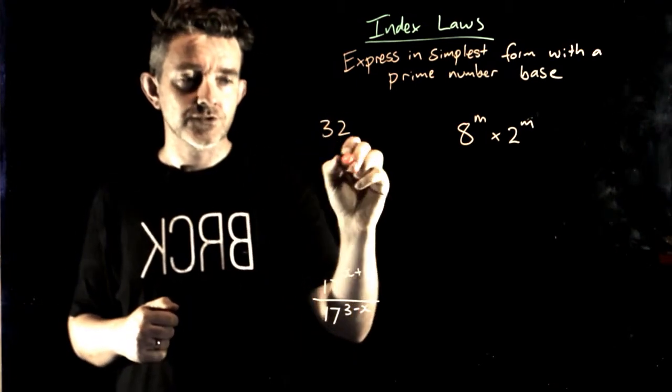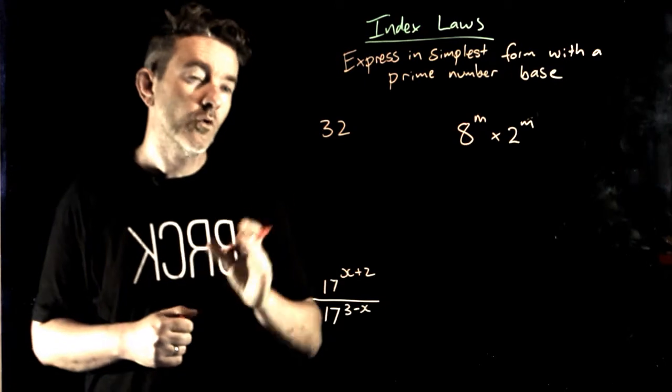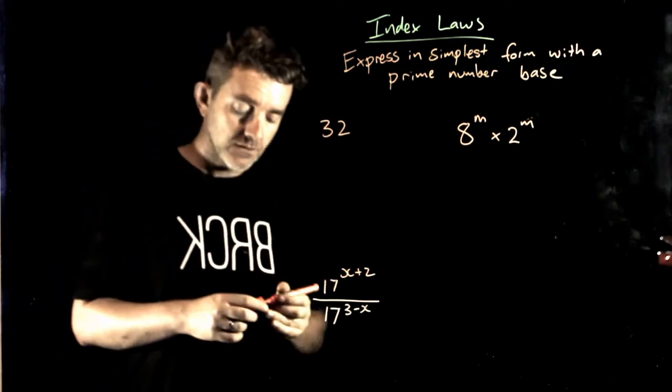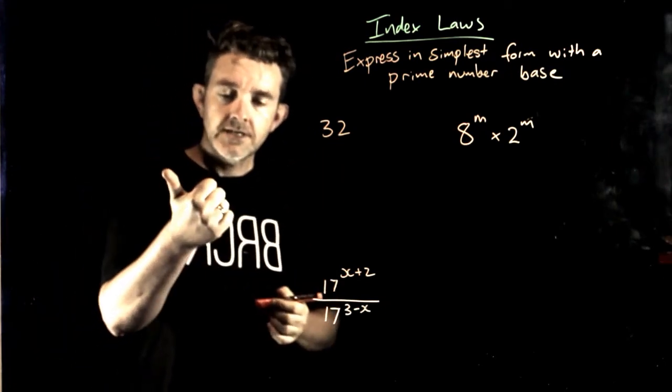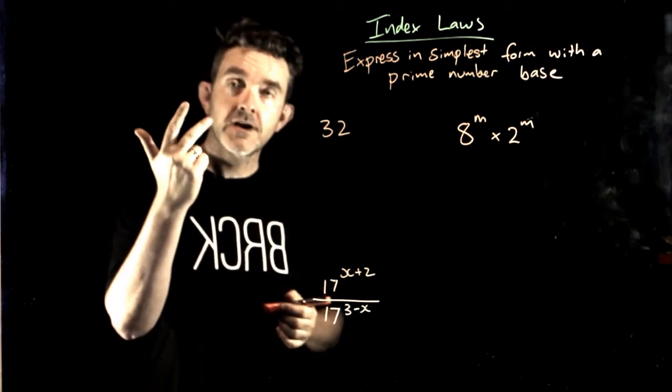So I could go all the way down. Or if I recognize that, I could know that's a power of 2. 2 squared is 4, 2 to the power of 3 is 8.